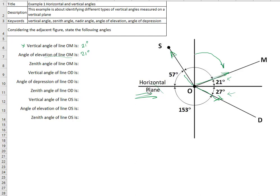What is the zenith angle of line OM? The zenith angle is measured from the vertical — from the zenith direction down to the line. So the zenith angle equals 90 minus 21 degrees, which equals 69 degrees. This is the zenith angle of line OM.